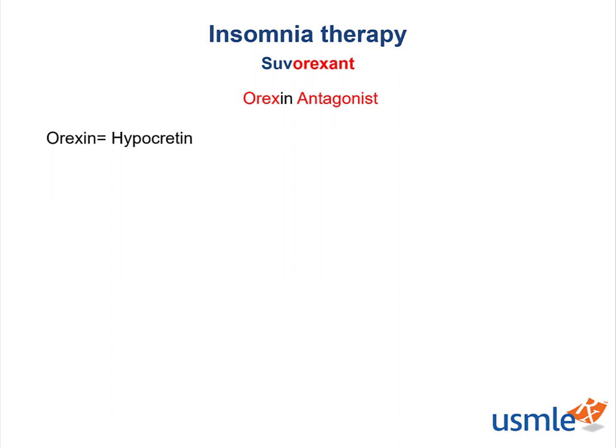Now let's focus on a new type of drug — suvorexant. Suvorexant is an orexin antagonist. Remember, orexin promotes wakefulness as part of the arousal system. So suvorexant, being an orexin antagonist, blocks orexin and decreases wakefulness, helping you sleep better. Another name for orexin is hypocretin — if you see that term in a question or textbook, don't get confused, they are essentially the same thing.